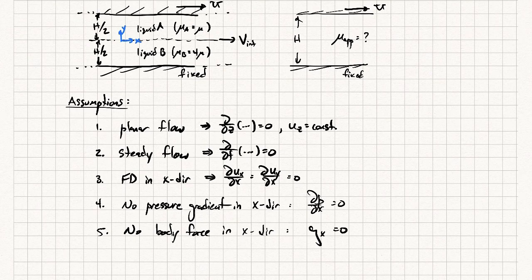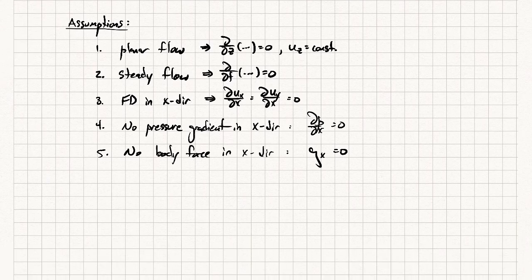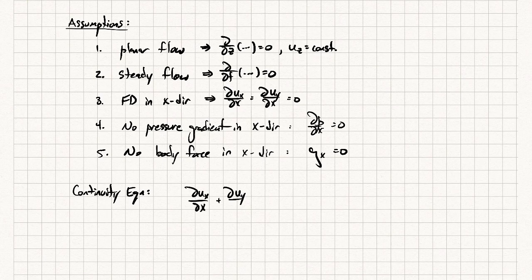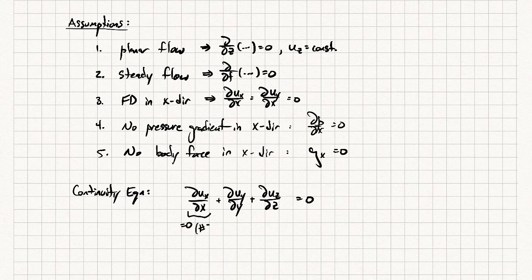Some additional assumptions: the liquids are incompressible, which is reasonable since they're liquids; and the viscosities are constant, not varying with position. So we have our assumptions. Let's go to the continuity equation first. We're dealing with Cartesian coordinates, so we write the incompressible continuity equation. We can simplify it quite a bit — the first term ∂u_x/∂x is zero because of assumption three, fully developed flow in the x direction.